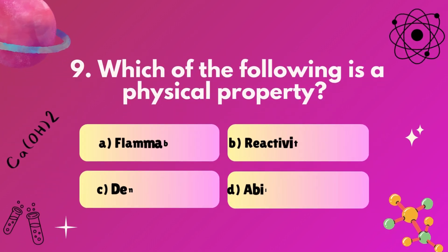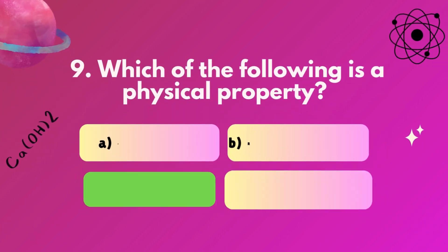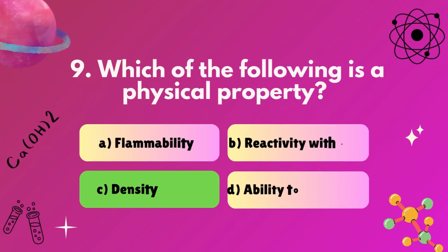Question 9: Which of the following is a physical property? A, flammability. B, reactivity with acid. C, density. D, ability to rust? Correct answer: C, density.